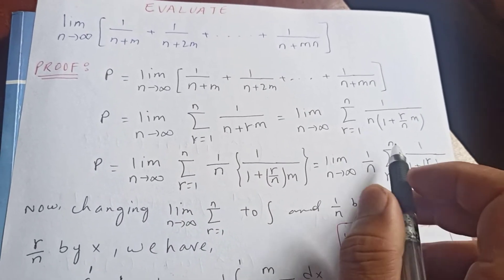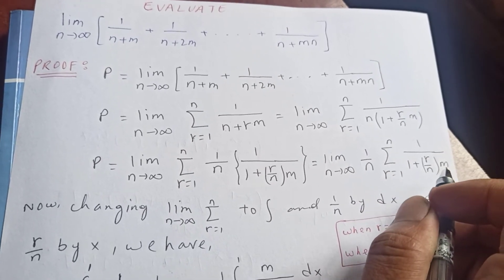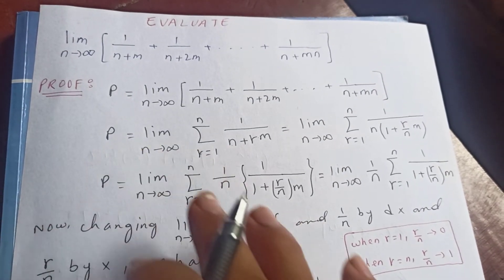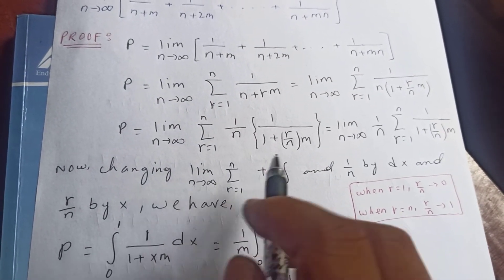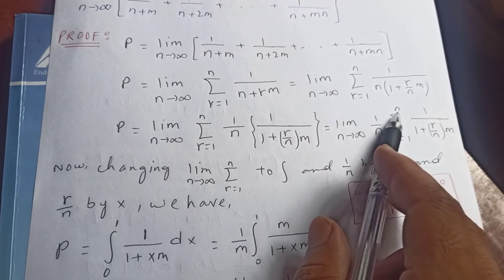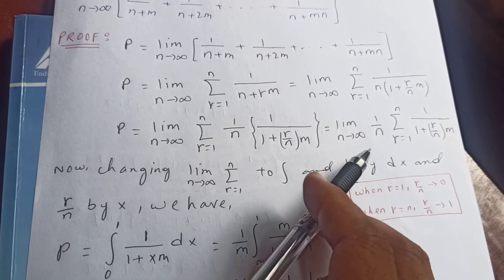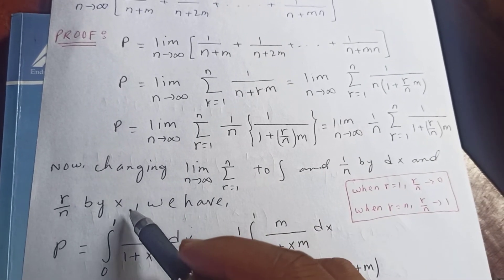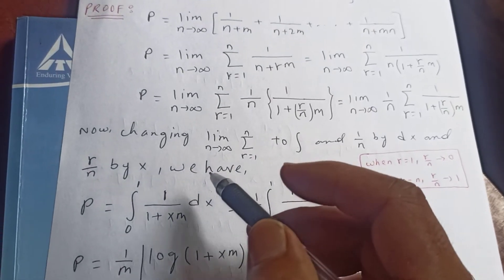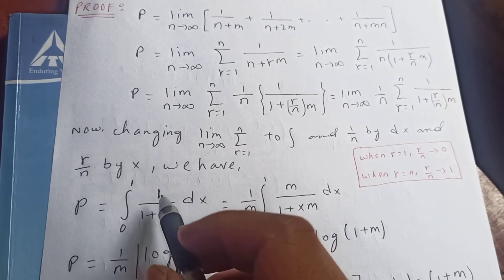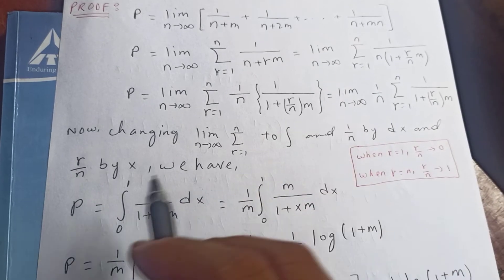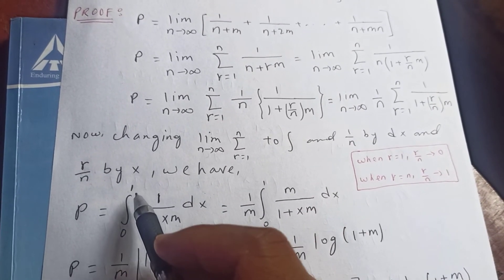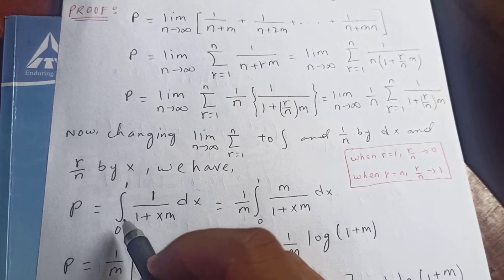Using the limit definition of the integral, we convert this limit and summation into an integral. Here 1/n corresponds to dx and r/n corresponds to x. So P is equal to the integral of 1 over (1 + x·m) dx.